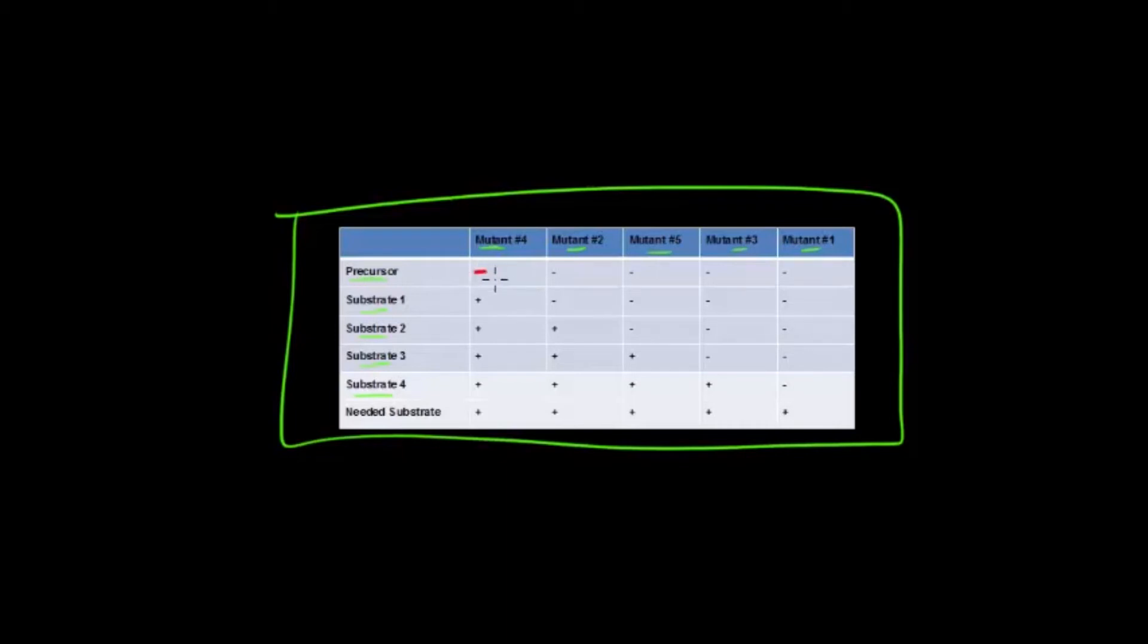If there is a negative symbol present, that means if you remove that molecule or if you mutate the corresponding enzyme, then this step, the precursor to the next step, will not occur. Let's pick mutant 5. There is a negative here, meaning that mutant 5, if you remove mutant 5, then this step from substrate 2 to substrate 3 will not occur.